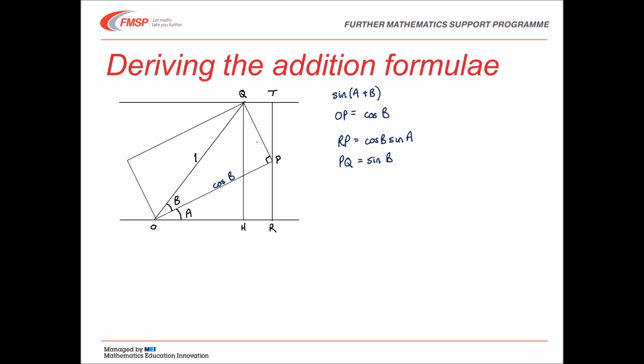Now look at triangle PTQ. We've just found length PQ. It's sin B. The angle at T is a right angle and the angle at P is the same as angle A. That means that length PT is equal to sin B, the hypotenuse, multiplied by cos A. Pause the recording for a moment while you check that you agree with all of these.